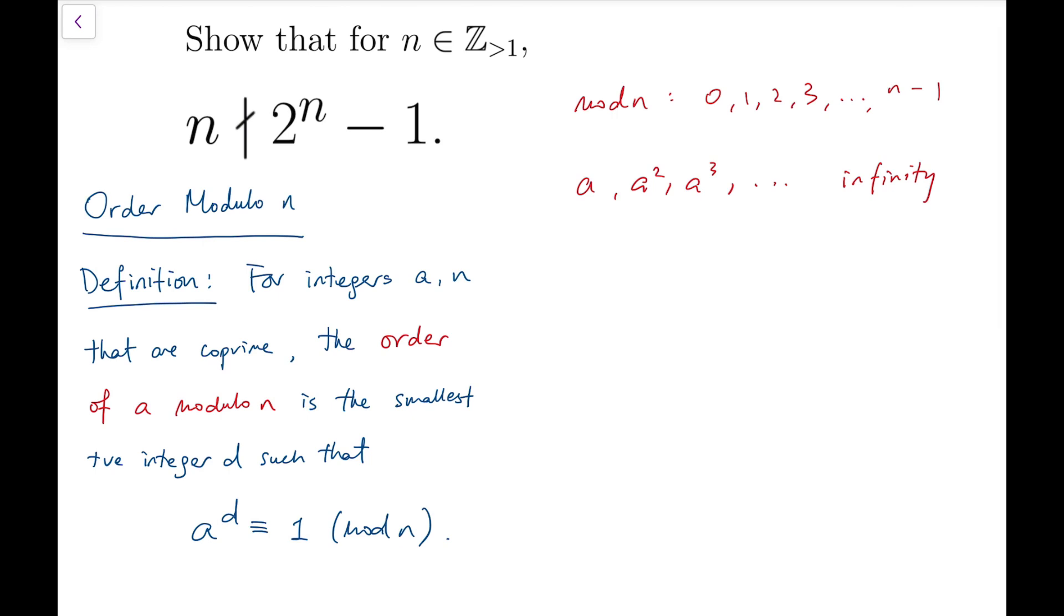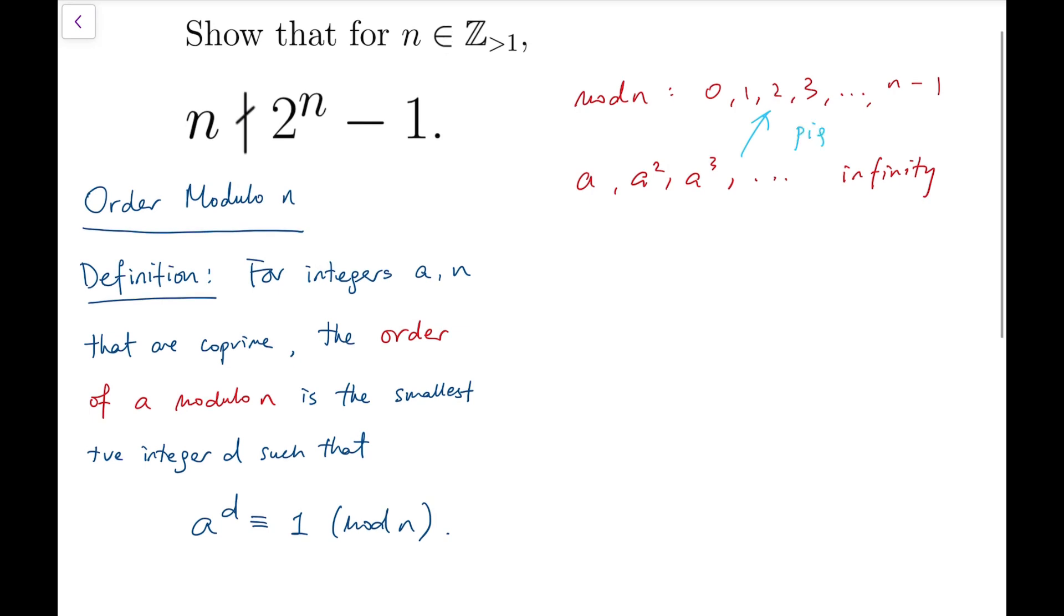There are infinitely many powers of a, and when they undergo the mod n operation, they will be mapped to either one of these n possible outcomes. And because there are only finitely many possible outcomes, and there are infinitely many powers, so using the concept of the pigeonhole principle,